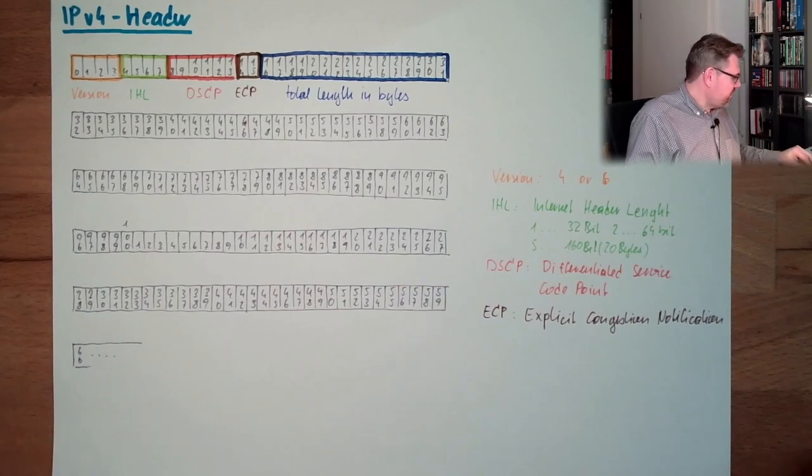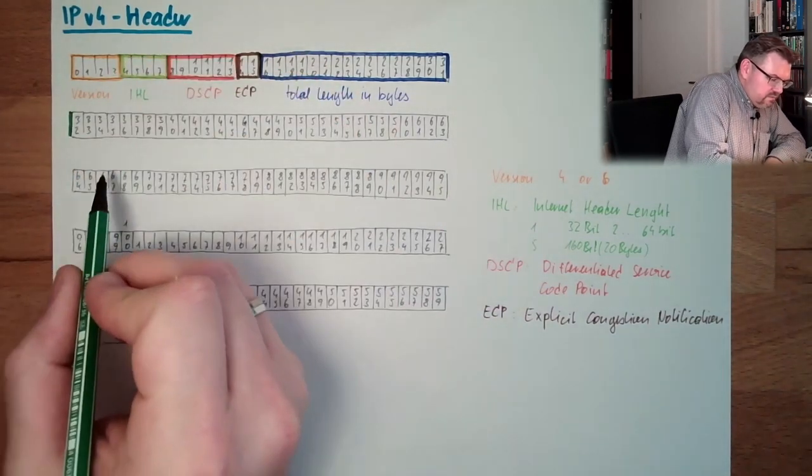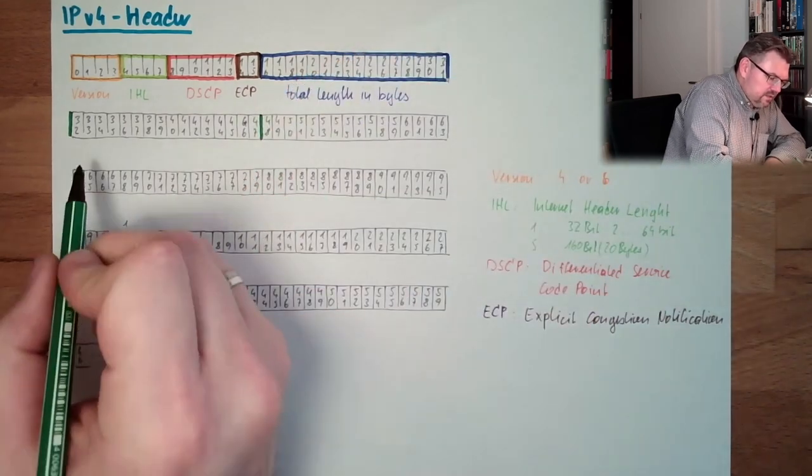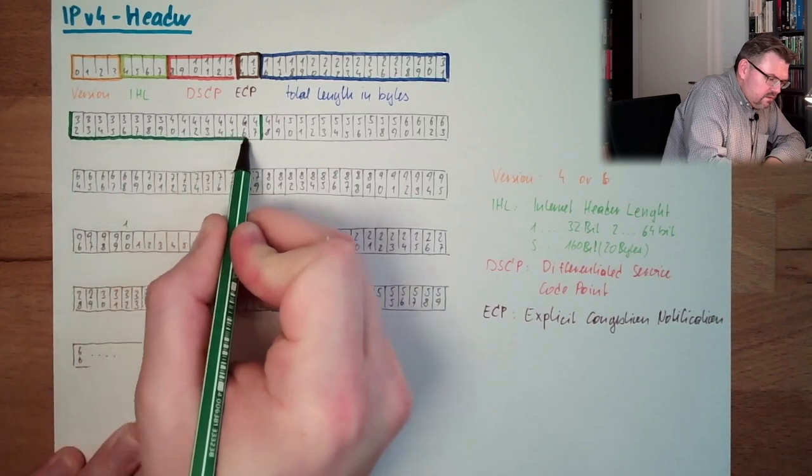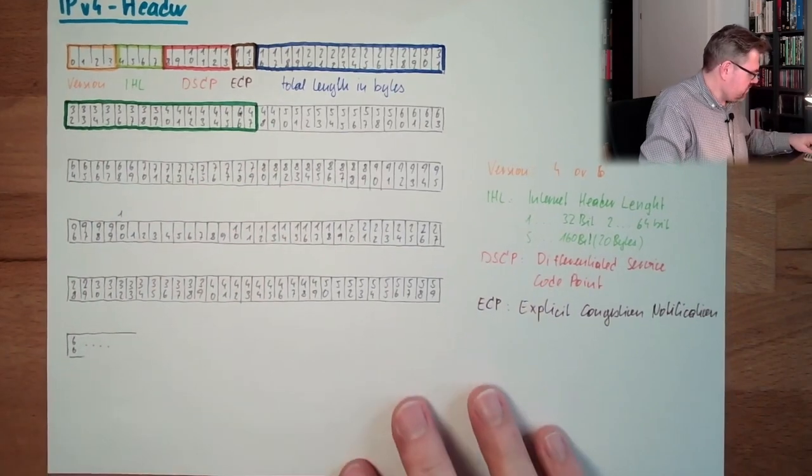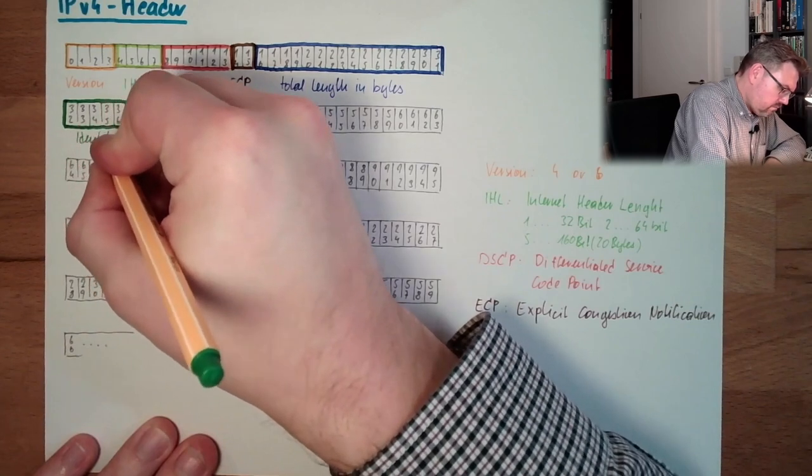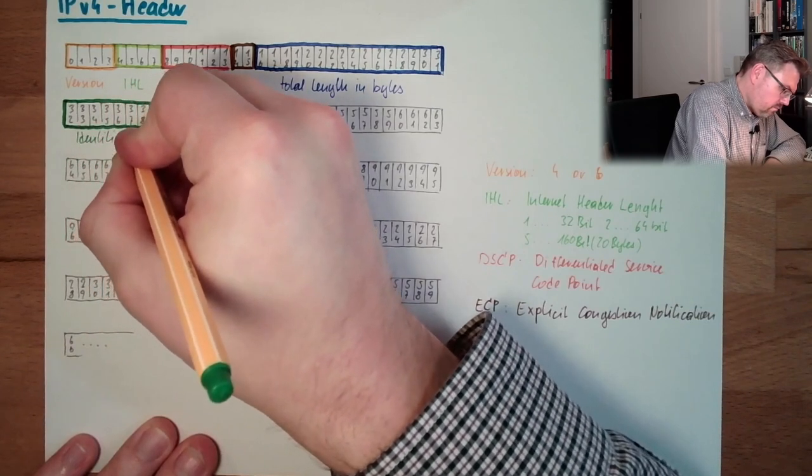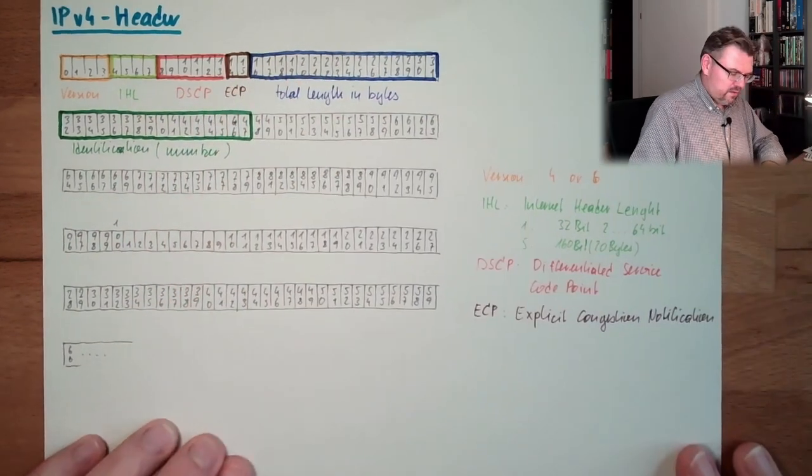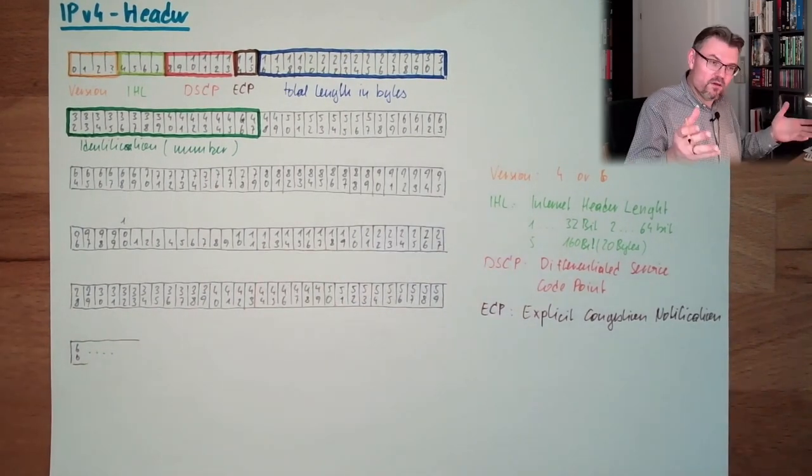The next thing here is the identification. It's actually going up to here, 16 bits. This is just a number, the number of the packet, the ID of the packet.